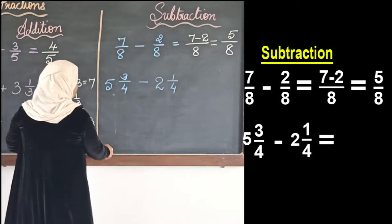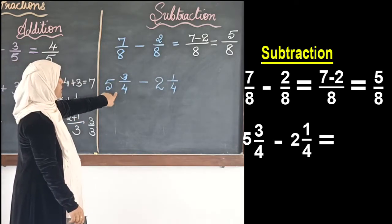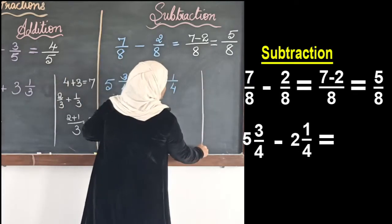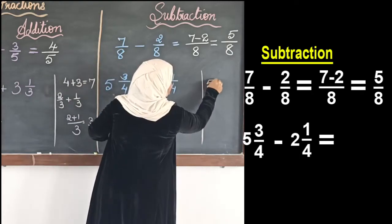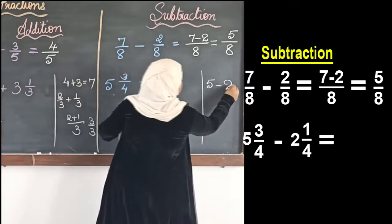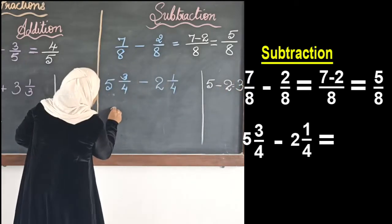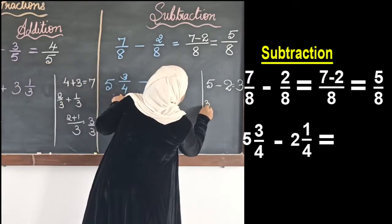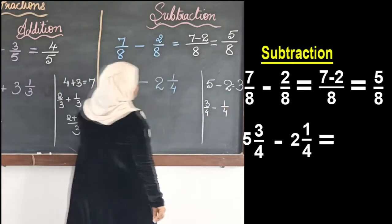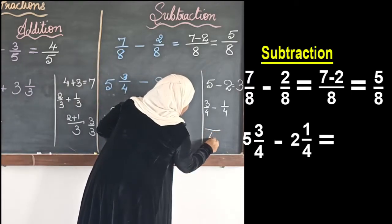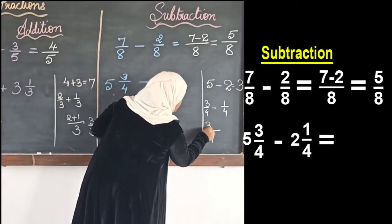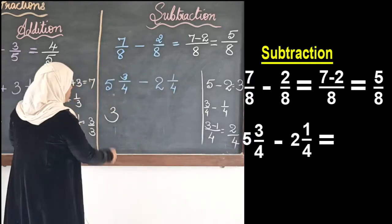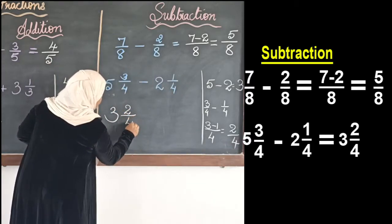The second example is a mixed fraction: 5 and 3/4 minus 2 and 1/4. We subtract the whole numbers first — 5 minus 2 equals 3. Then we subtract the fractions: 3/4 minus 1/4 — the denominator stays 4 and we subtract the numerators: 3 minus 1 equals 2, giving 2/4. So the answer is 3 and 2/4.